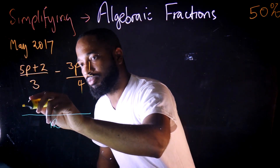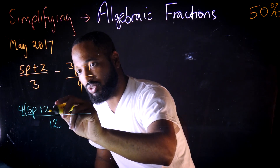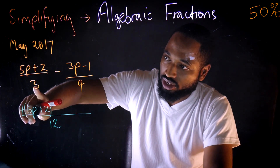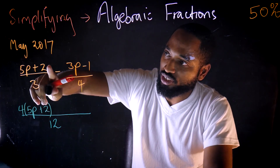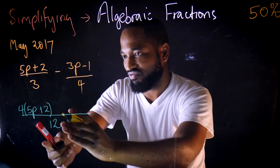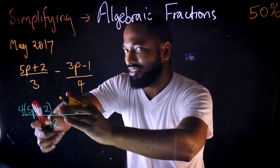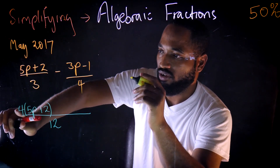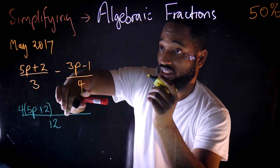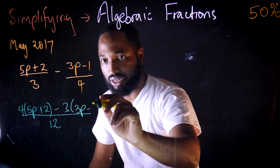3 into 12 goes 4 times, so we write a 4 outside. We divided 12 by 3 and got 4, so we multiply this numerator by 4. Similarly, 4 into 12 goes 3 times, so we multiply the numerator of the second fraction — (3p minus 1) — by 3.